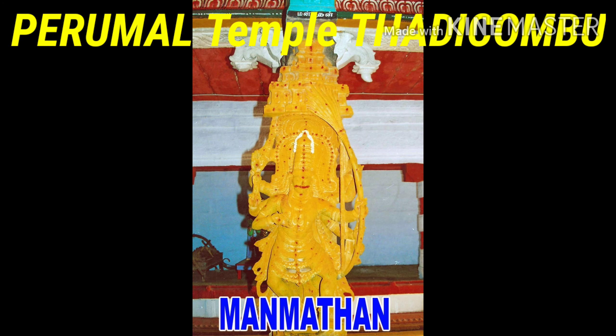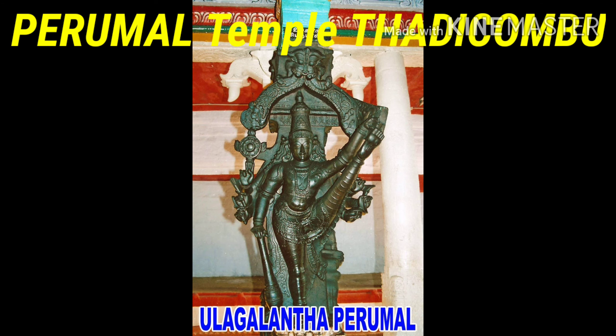6. Sri Kamadeva. The sculpture of Manmadan, the son of Vishnu, is seen holding a sugarcane bow and a flower arrow in his hands. He is the love god of Hinduism, depicted with six hands. 7. Sri Trivikrama (Alagalanda Purumal). Vishnu was born as Vamana to take away the three worlds of Indra. He went to Mahibali requesting a donation of three feet of earth, then grew to the sky as Trivikrama, measuring the lower world with his right foot and the upper world with his left foot. This sculpture is a surprising lyric of artistry.